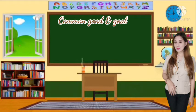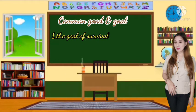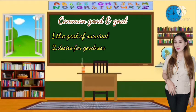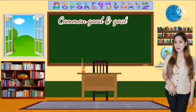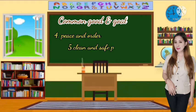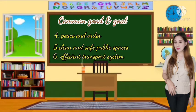Commonly, we build society to achieve a certain purpose or goal. Number one: our desire to achieve the goal of survival — we survive when we relate with other people. Number two: we are united and work together because of the natural desire for goodness. Another common reason refers to social conditions which enable persons and groups to fulfill their goals and achieve well-being. And of course, for the purpose of peace and order, clean and safe public spaces, or efficient transport and public services.